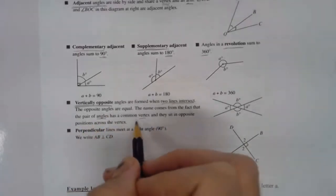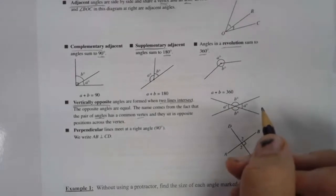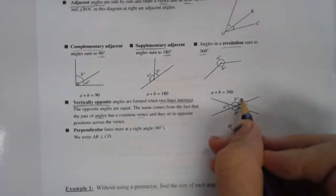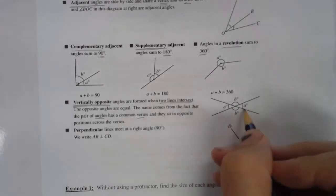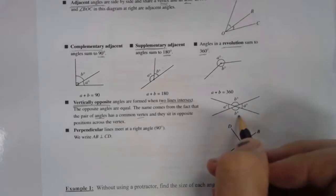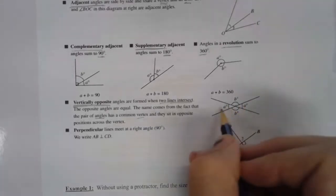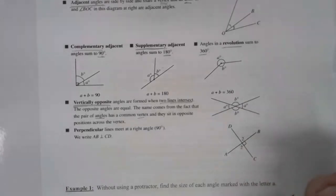The name comes from the fact that the pair of angles has a common vertex, and they sit opposite each other. So B is the same. This angle is the same as that angle. So if we knew the measurement for this angle here, the vertically opposite angle will have the same measurement. The same thing with A. These are vertically opposite and will have the same measurement of degrees.